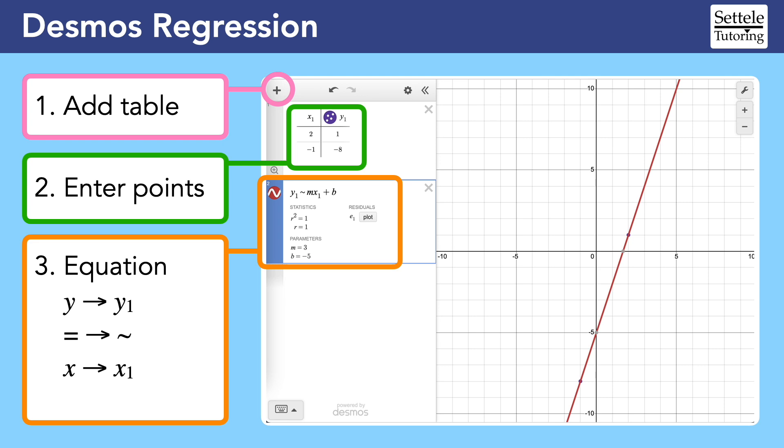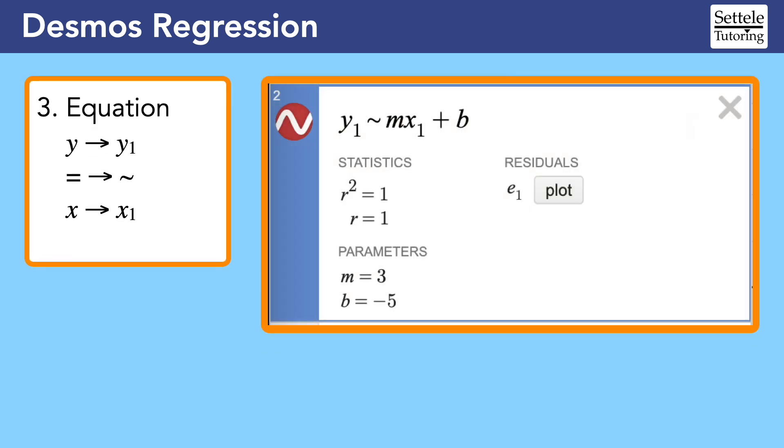If we follow these steps correctly, Desmos will graph the equation, which should pass through the points in the table. Let's look more closely at the regression instructions and results. Once we type the correct regression at the top, Desmos will provide the rest of this information.